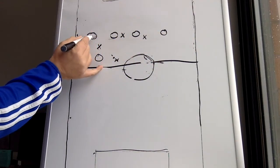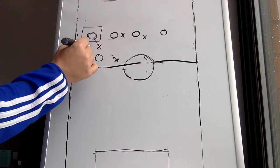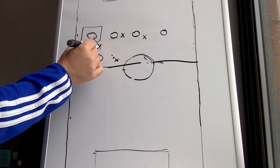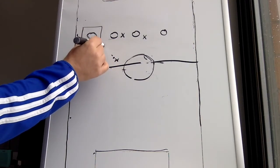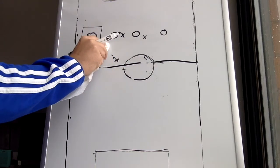this presents a problem. Now does the defender commit and leave all this space in behind or does he let him float in between the lines and then he could pick up the ball and hit through balls to the forwards? It's a very difficult situation here.